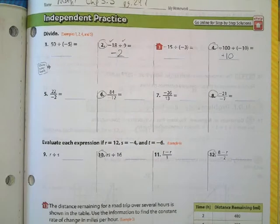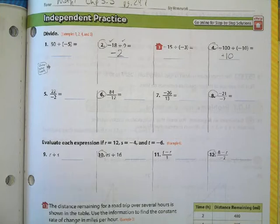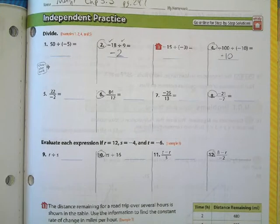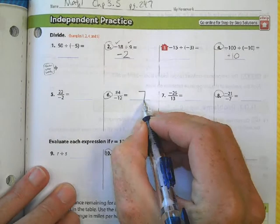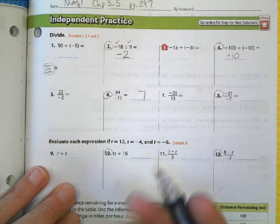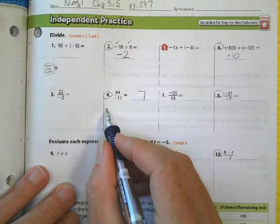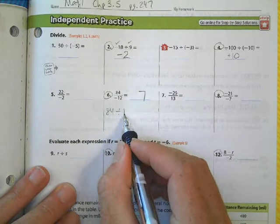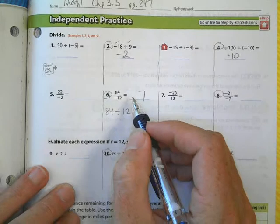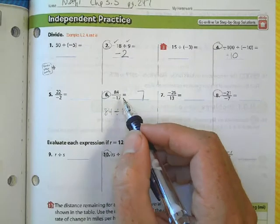84 divided by 12 - it is a fraction, but it's just simply 84 divided by 12. That happens to be 7. If you were using a calculator, you could type that in as 84 divided by 12, or you recognize 12 times what gives me 84.